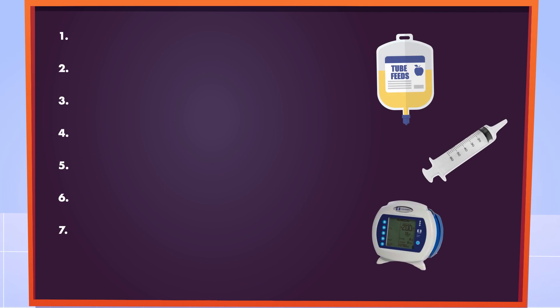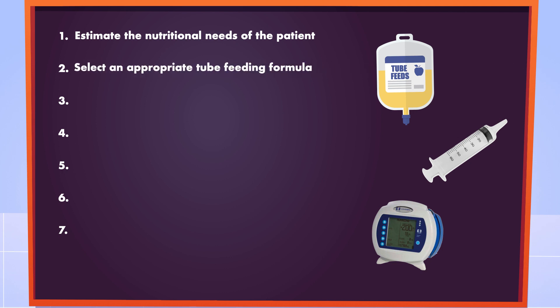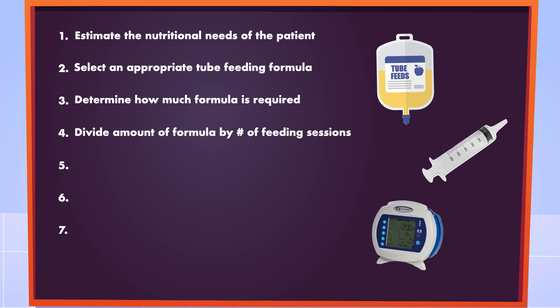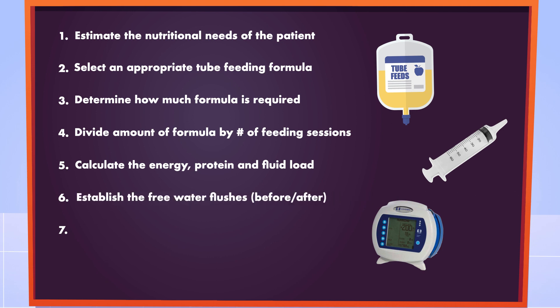We begin by looking at the seven-step algorithm. When calculating bolus and intermittent tube feeding, the first step is to estimate the nutritional needs of the patient. Then you must select an appropriate tube feeding formula, determine how much formula is required to meet the estimated nutritional needs, and divide that amount of formula by the number of feeding sessions recommended. At this point, you can calculate the energy, protein, and fluid load, establish the free water flushes — which should be given both before and after each feeding session — and decide if it will be a bolus or intermittent feeding regimen. Only once you've done all of these will you be ready to write a prescription.